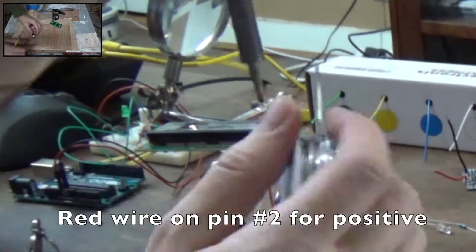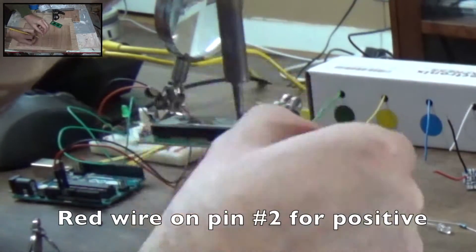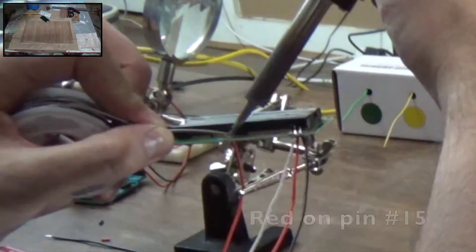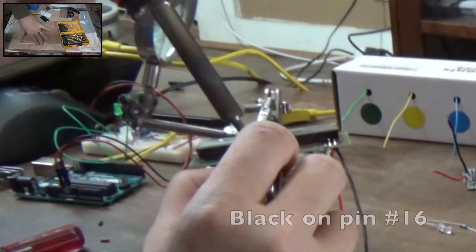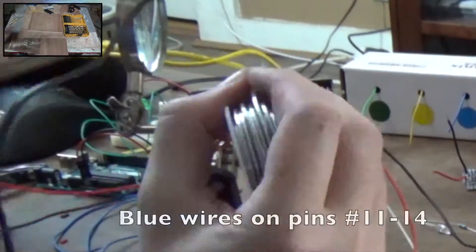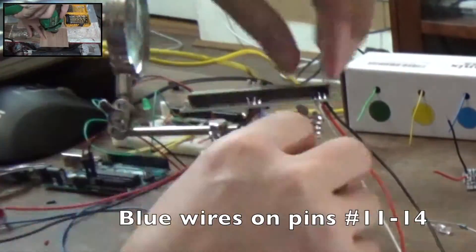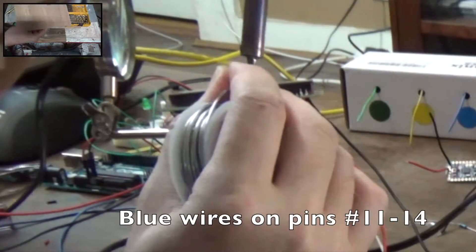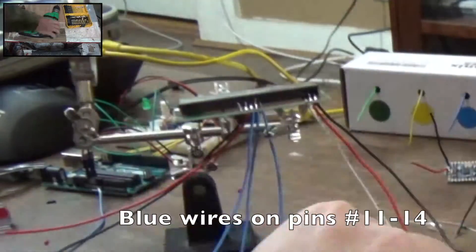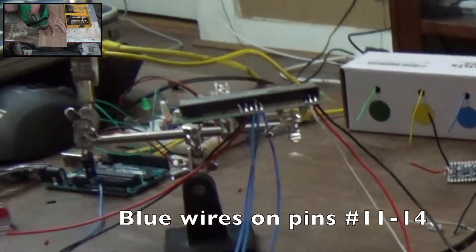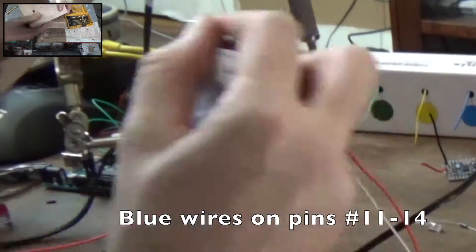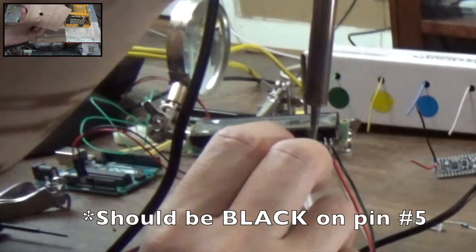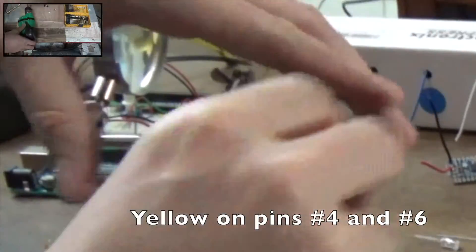Red on pin 2, black on pin 1. Pin 15 gets a red wire and pin 16 gets a black. We're going to do four blue wires for pins 11, 12, 13, and 14. Pin 5 should be a black wire but I actually made it red. Pins 4 and 6 are both yellow and that should be it for the LCD screen.